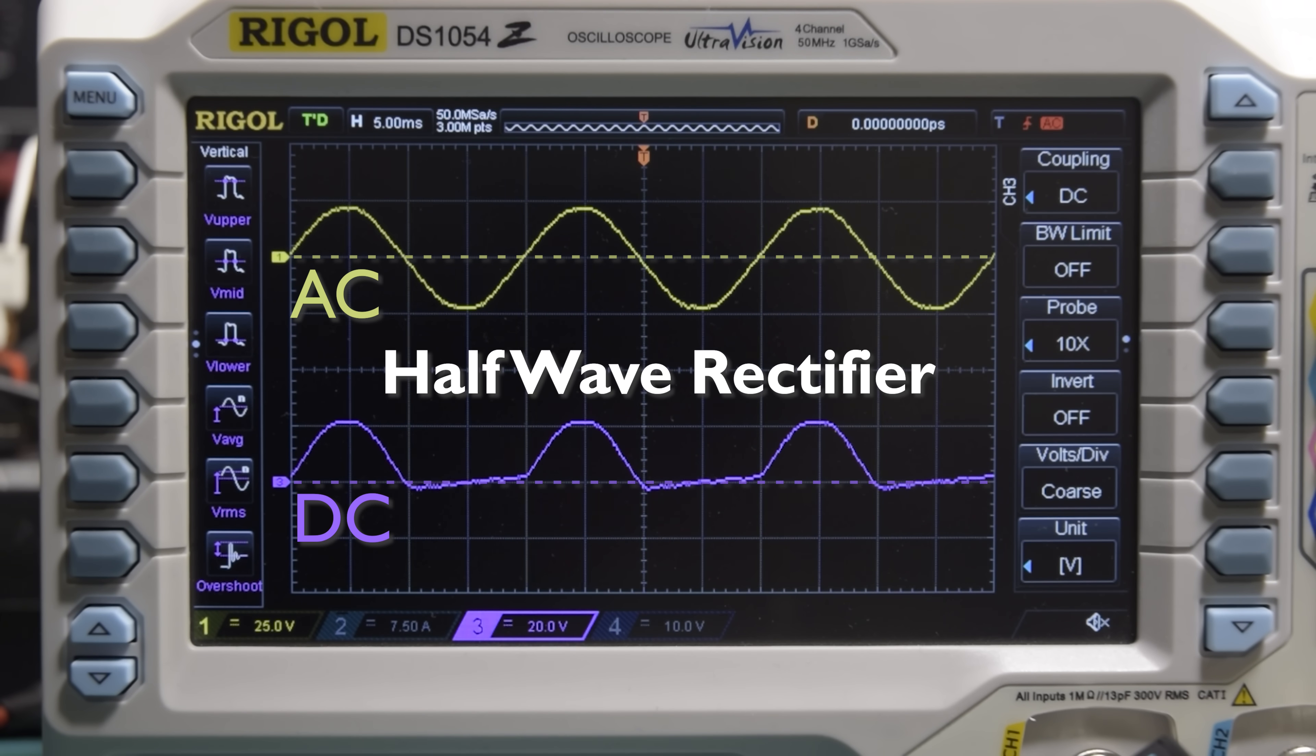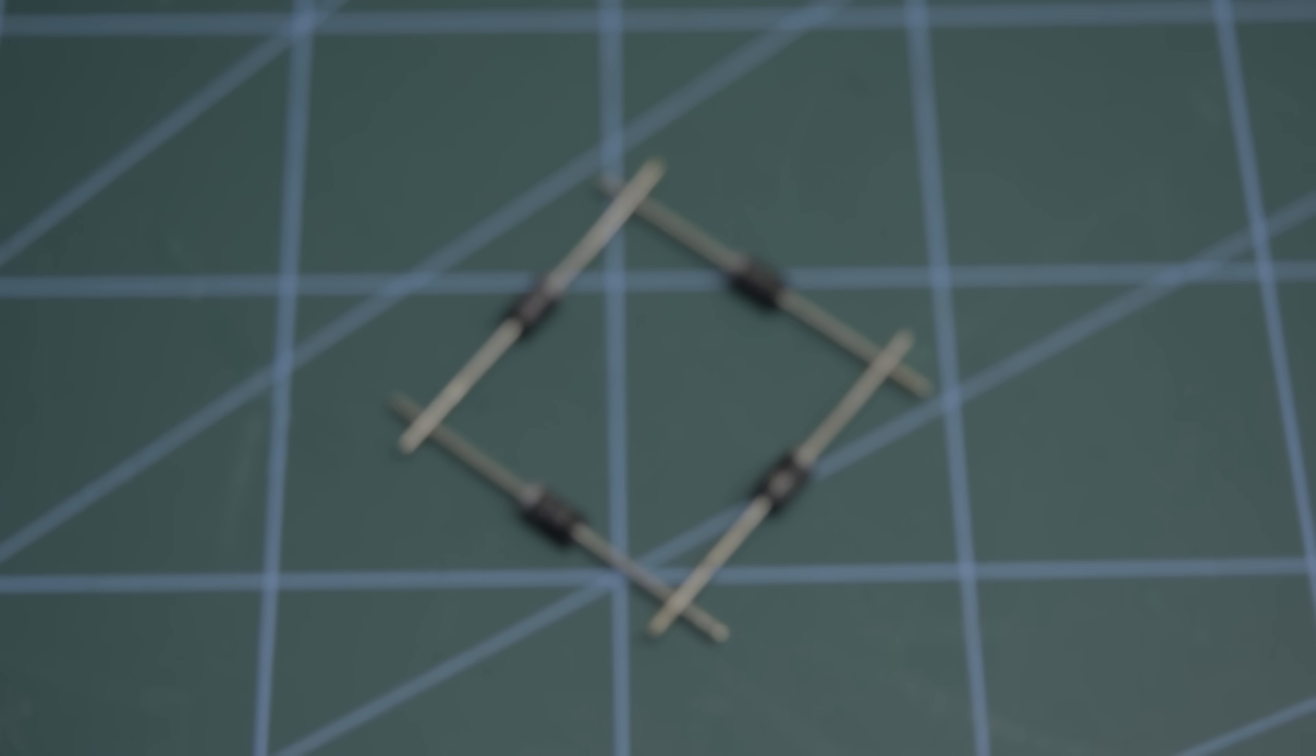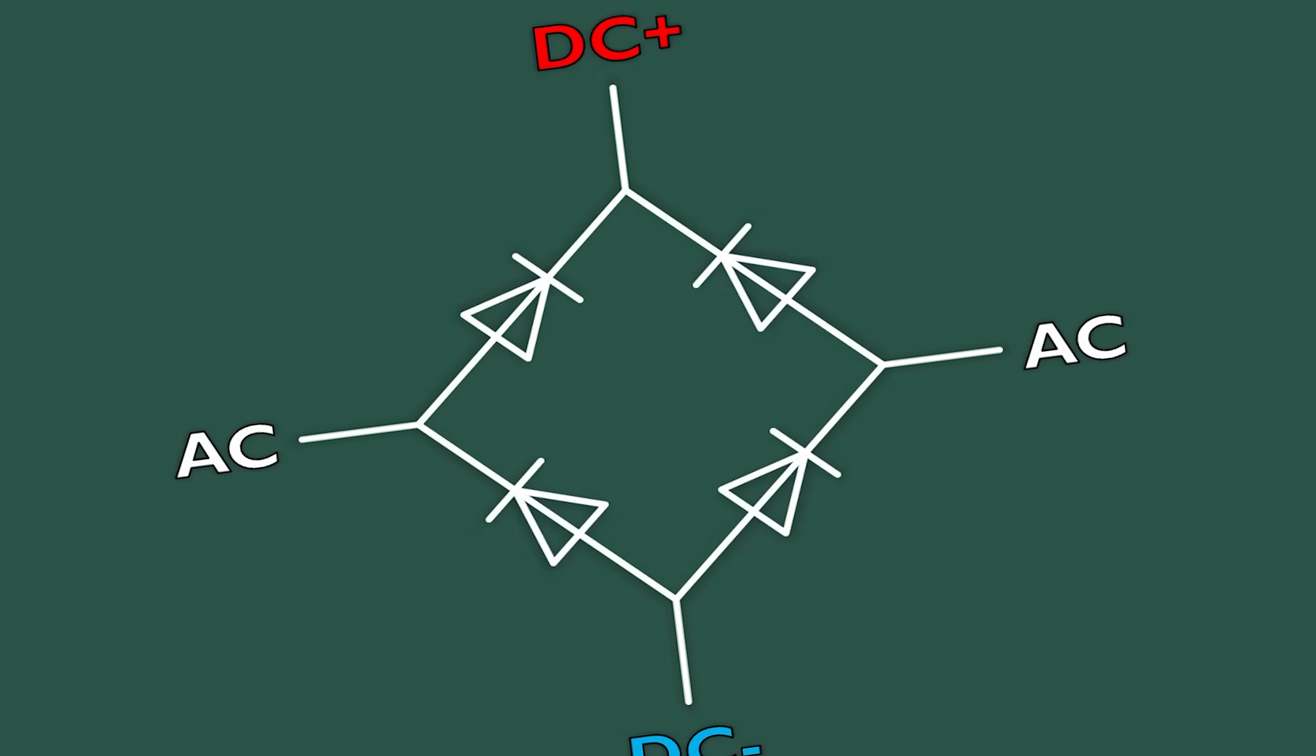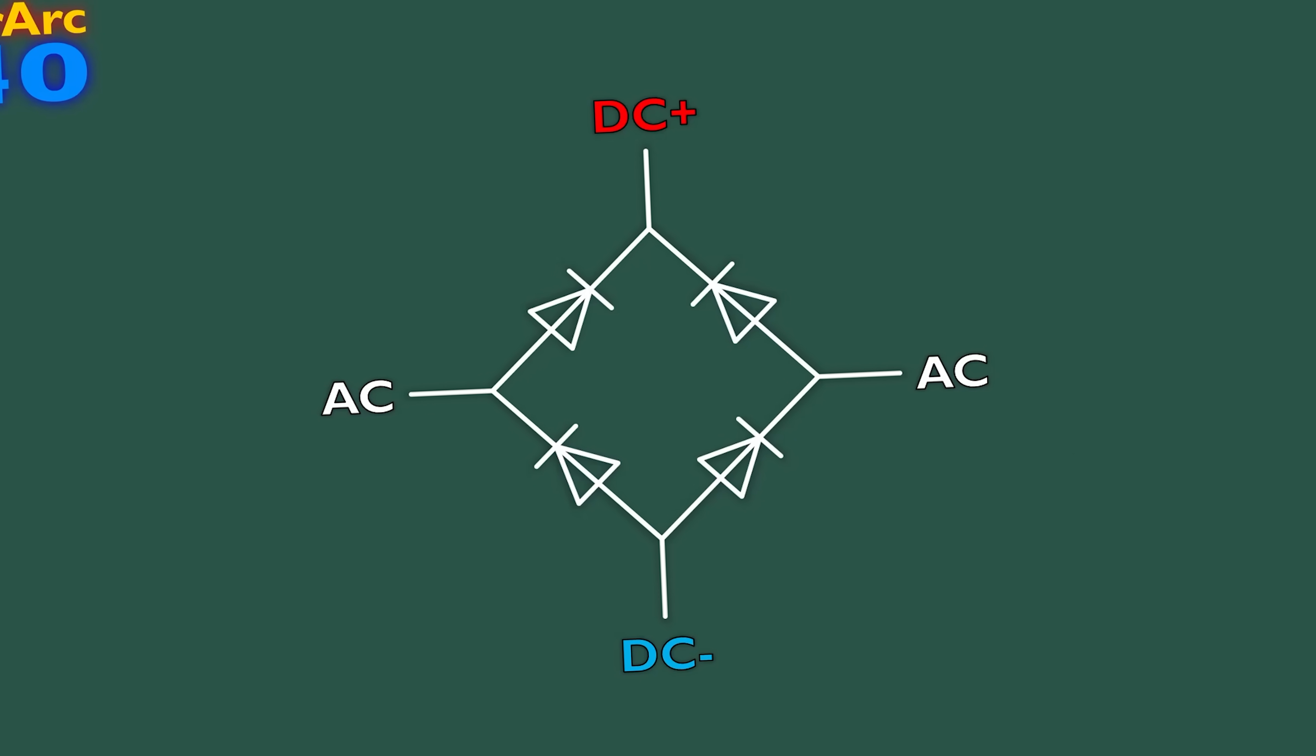This is known as a half-wave rectifier, and it's pretty crap, so what we usually do is put four diodes together into a clever arrangement known as a full bridge rectifier. This is the schematic symbol typically used for a full bridge rectifier, and we can see the four diodes.